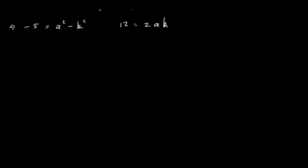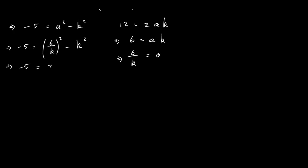We have two equations and need to find a and k. I'll use substitution. From 12 equals 2ak, dividing by 2 gives 6 equals ak, so a equals 6 over k. Substituting into the first equation: minus 5 equals 6 over k squared minus k squared, which is 36 over k squared minus k squared. Multiplying across by k squared gives minus 5k squared equals 36 minus k to the power of 4.